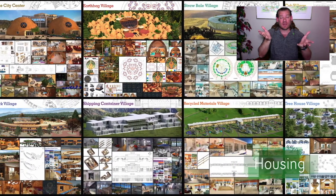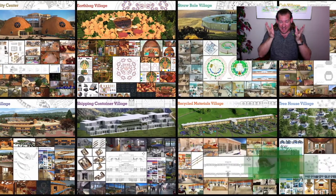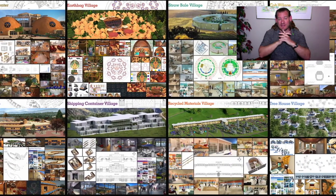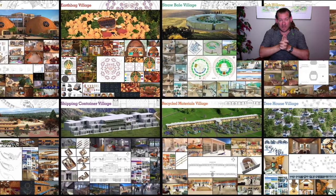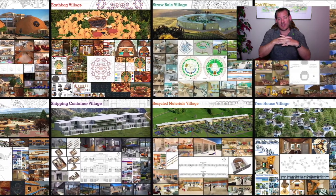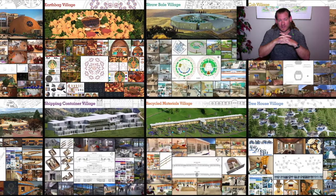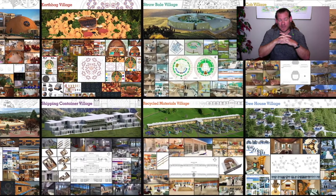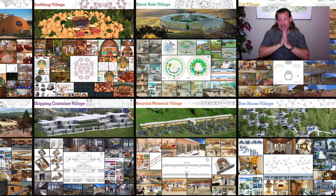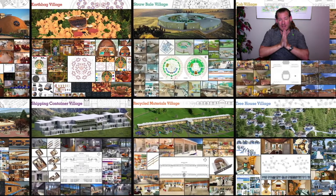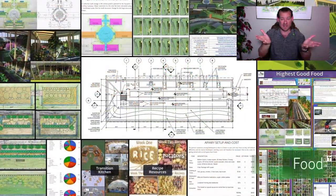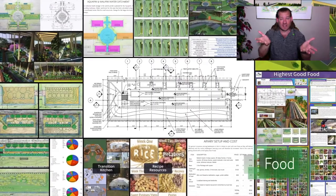One Community is bringing together people with the consciousness and the desire for the highest good of all life on this planet to build sustainable, regenerative, and self-replicating teacher demonstration hubs as a pathway to global sustainability. This is our August 8th, 2021 edition of our Weekend Progress Update, and today our topic is Designing Global Cooperatives because we are doing just that.